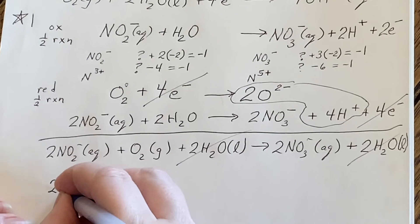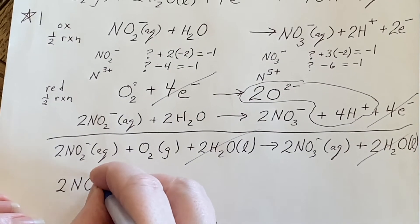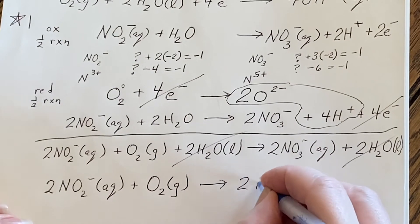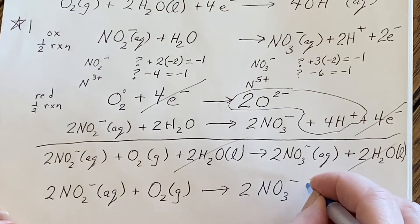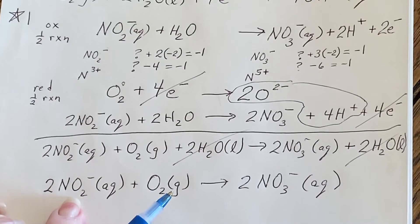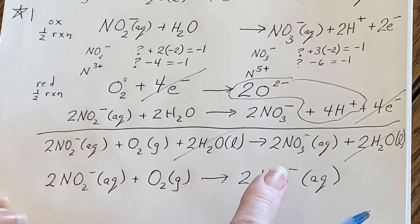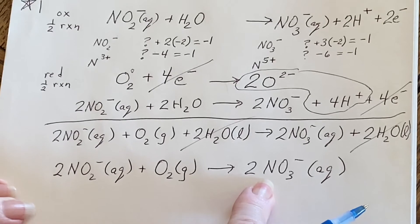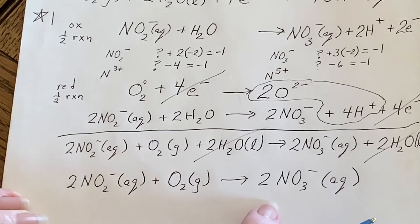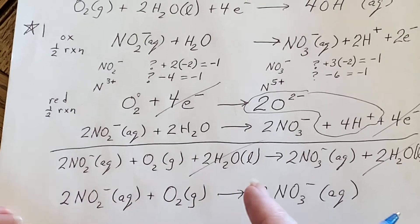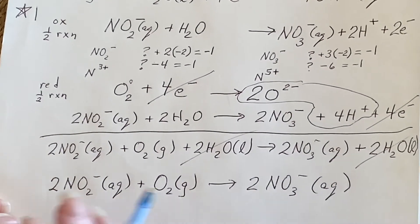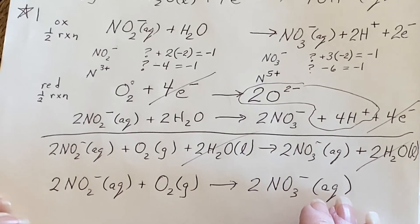So overall, I come up with this net ionic equation, which probably makes you wonder, why don't I just do that to begin with? Because I could have, I could have just taken nitrite, added oxygen and gotten nitrate. But the fact of the matter is, I do have to be careful because when they say in basic conditions or in acidic conditions, it might end up changing this quite a bit.